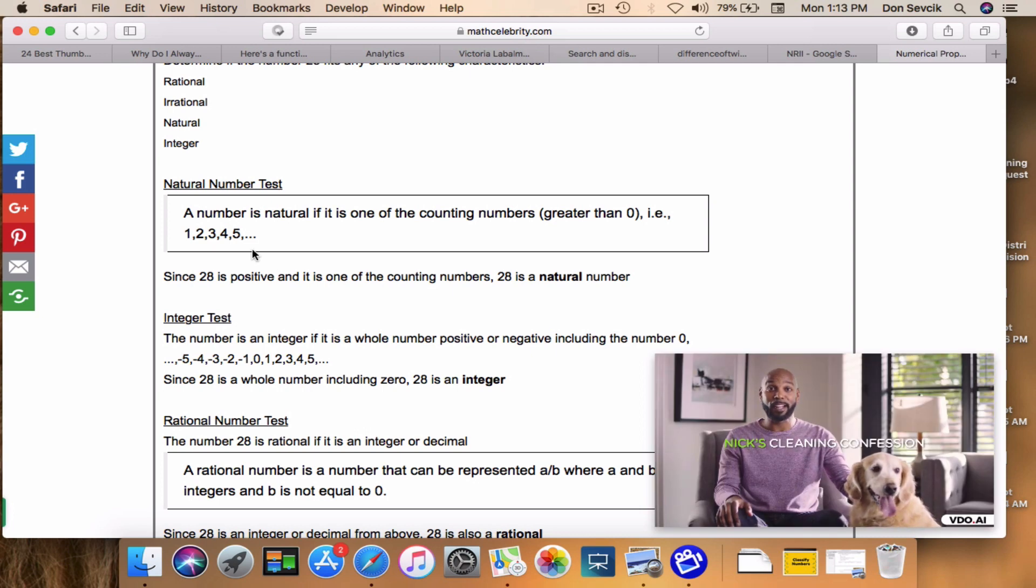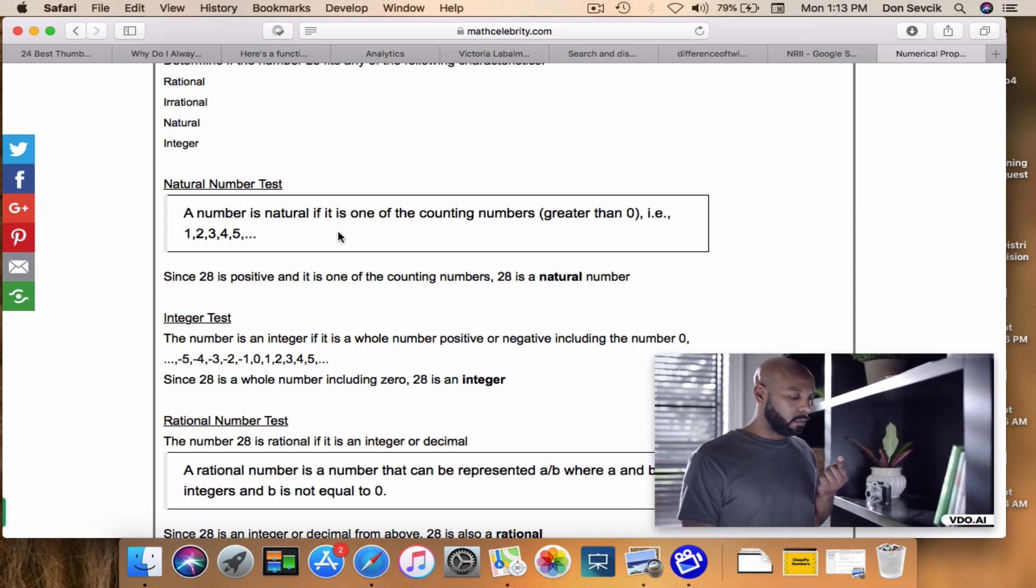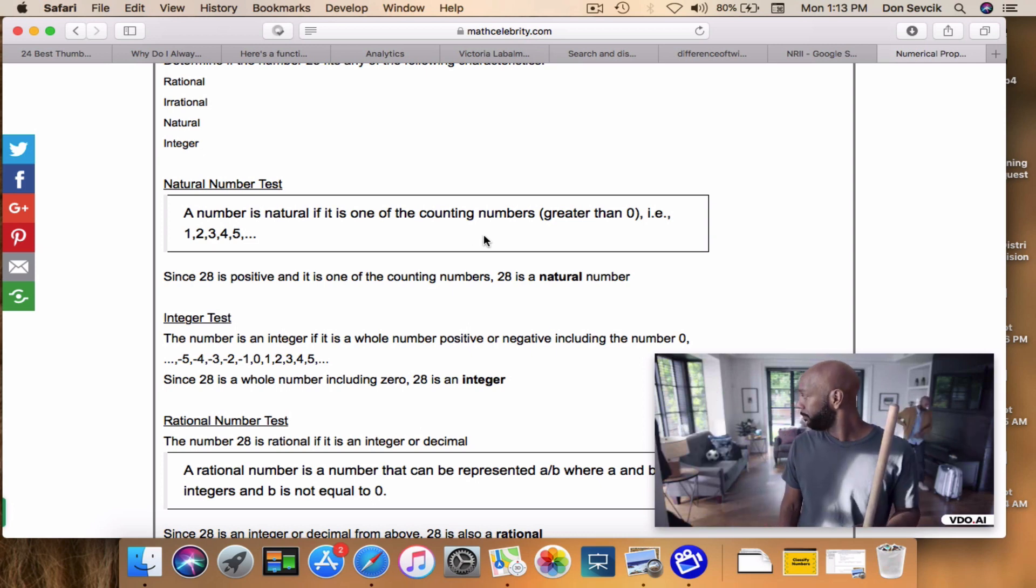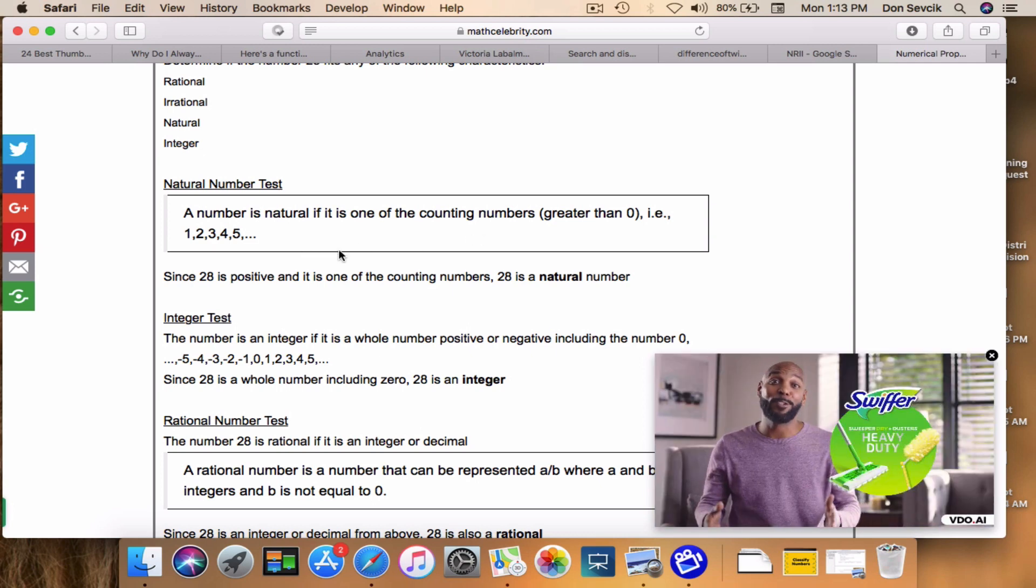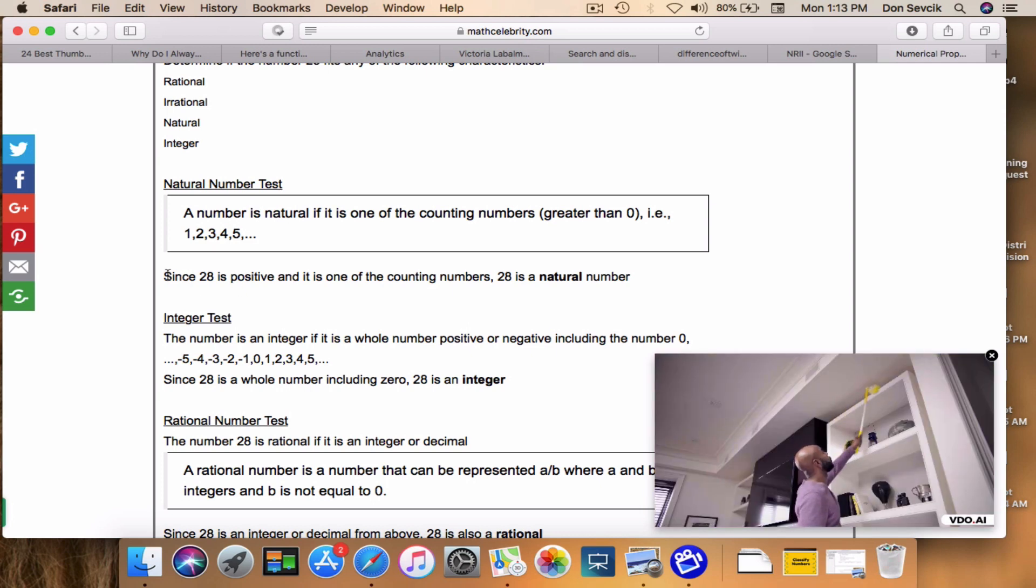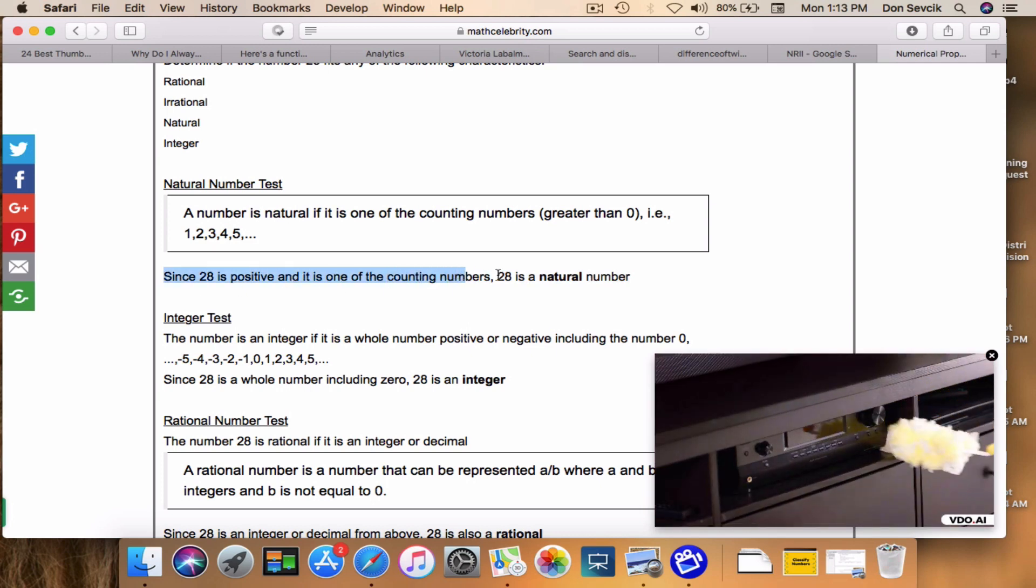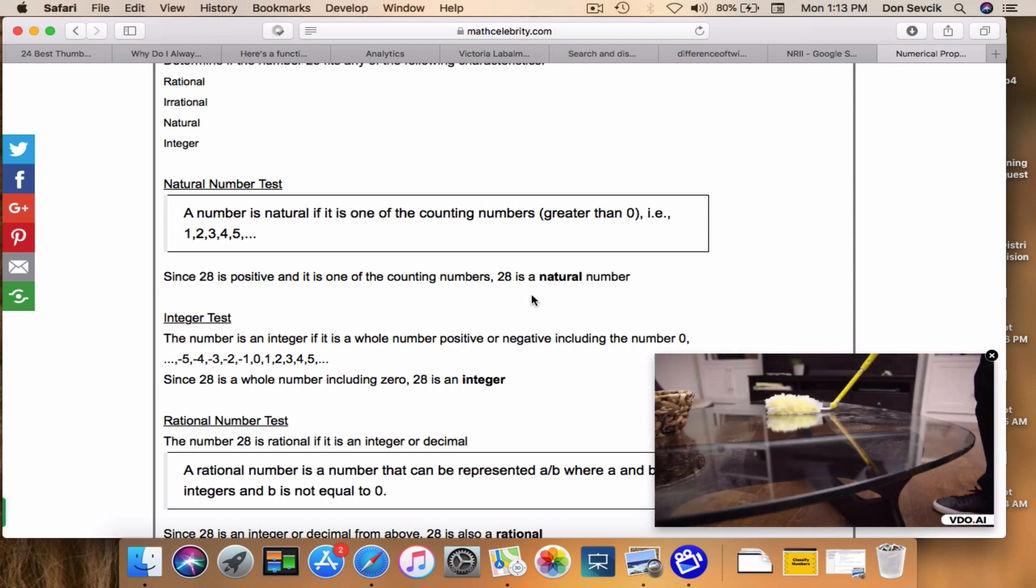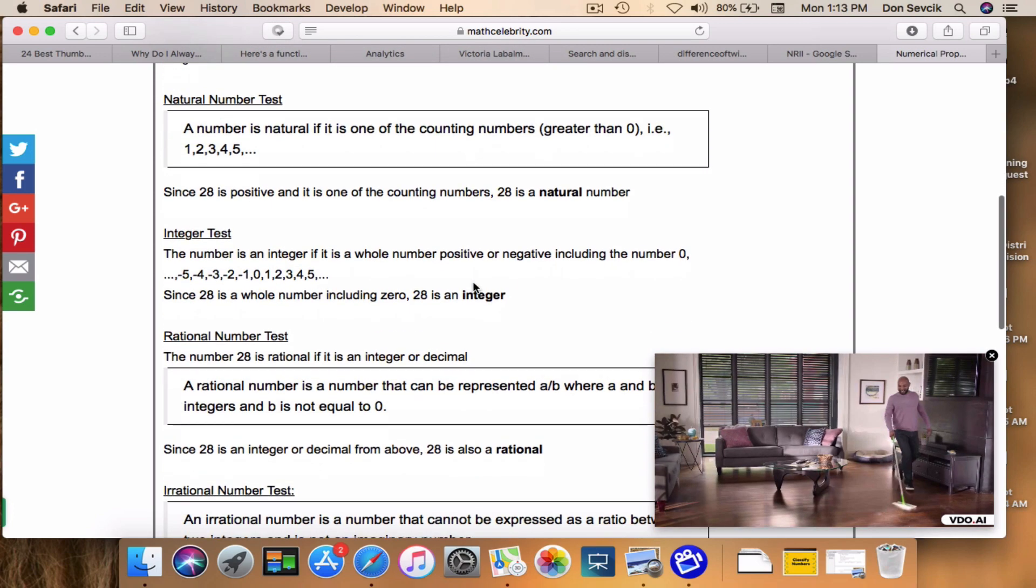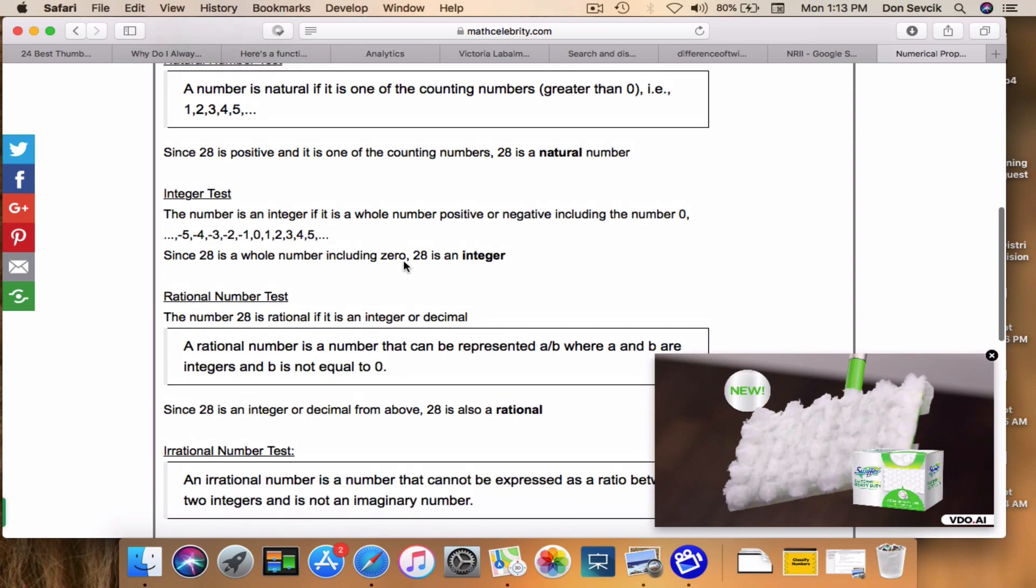Remember, we covered in our presentation a number is natural if it was one of the counting numbers greater than zero - so 1, 2, 3, 4, 5, etc. Well, since 28 is positive and it's one of the counting numbers, 28 is indeed a natural number. What the calculator does is it'll test for the four properties.